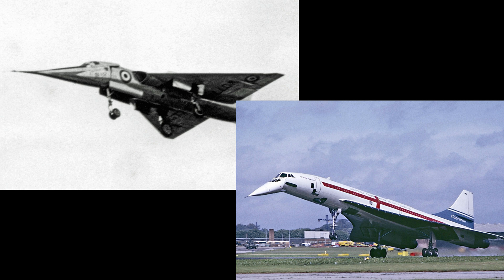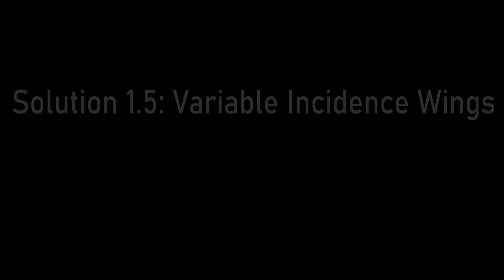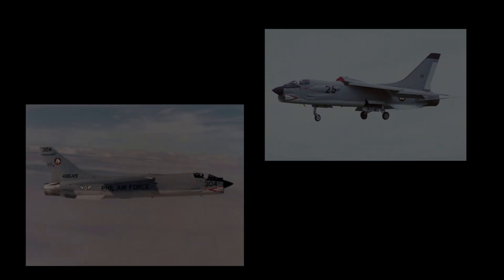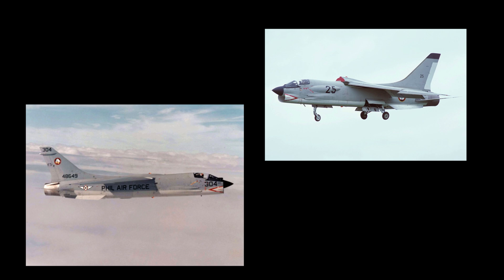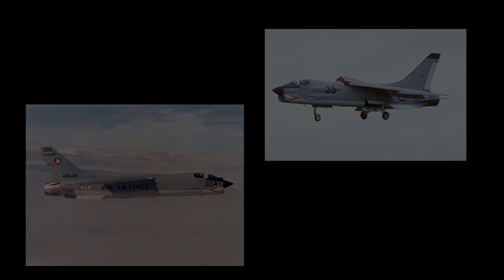In my opinion this is quite an elegant solution and is best seen on the Concorde. Solution 1.5: Variable Incidence Wing. Much like the droop nose, variable incidence wings attempt to allow pilots to see the runway even at high angles of attack. This method involves pitching the wings up relative to the rest of the aircraft. The image on top shows the Vought F-8 Crusader with its wings pitched up, and the image below shows the plane with the wings flushed for flight.